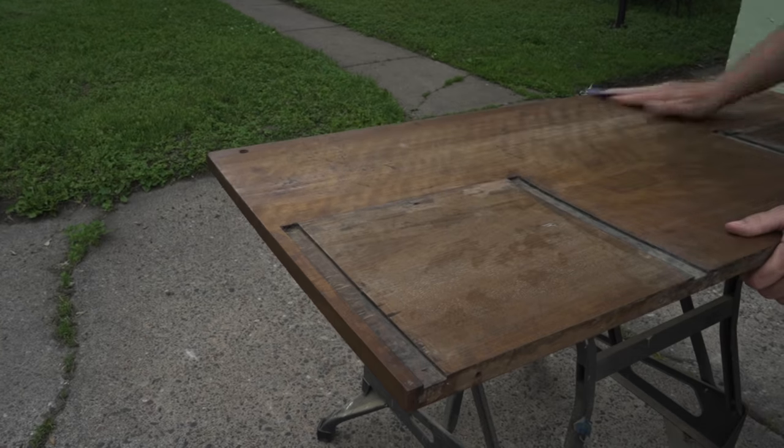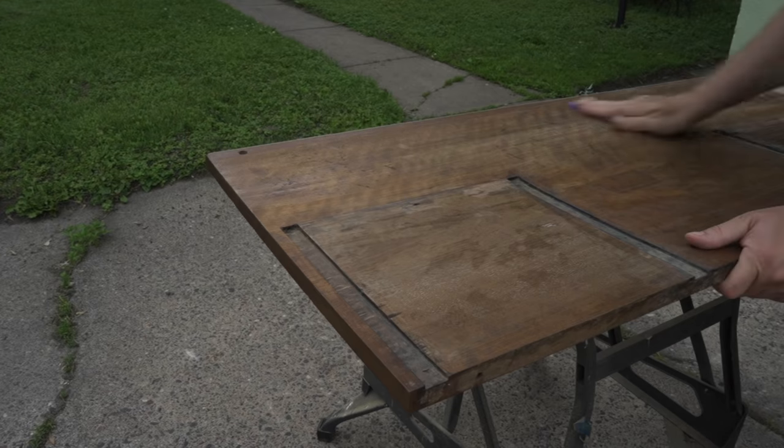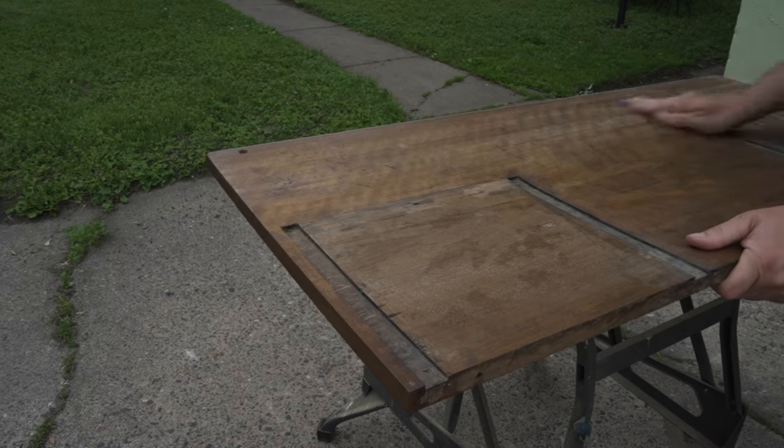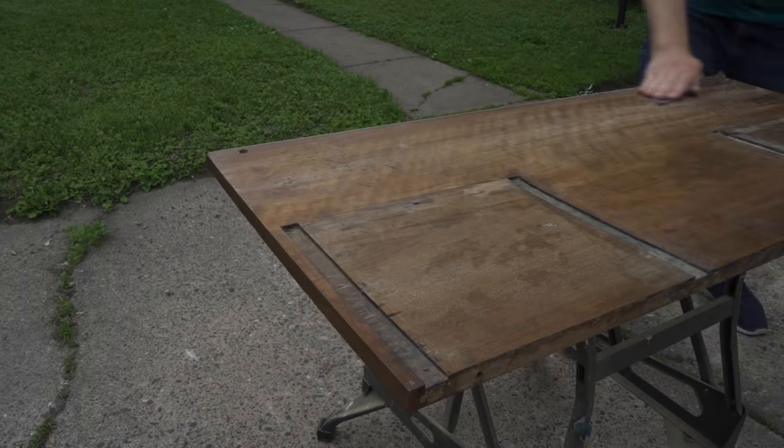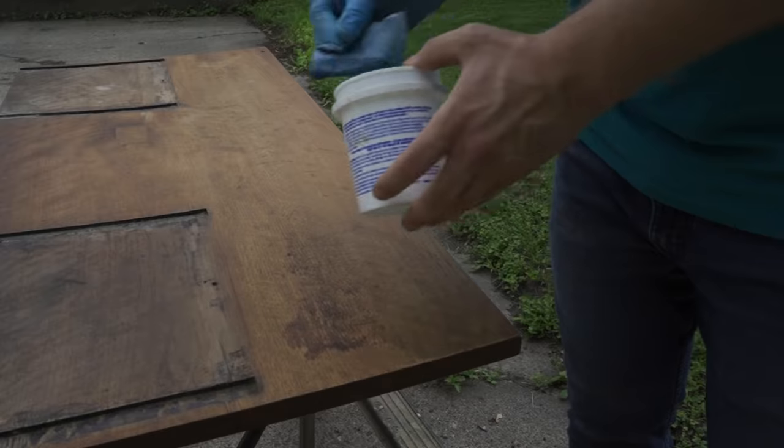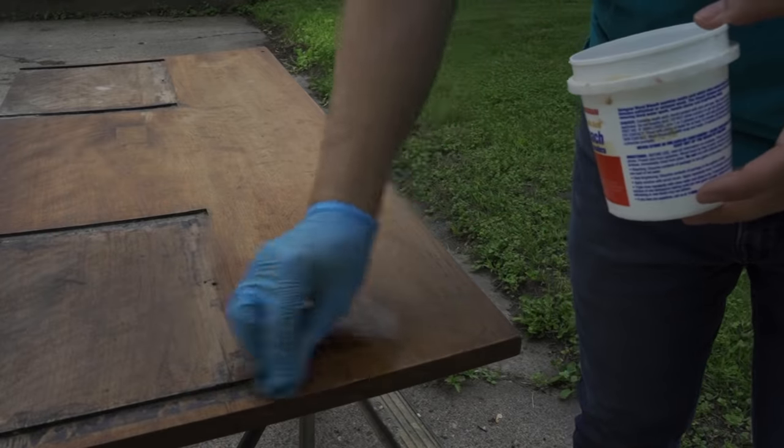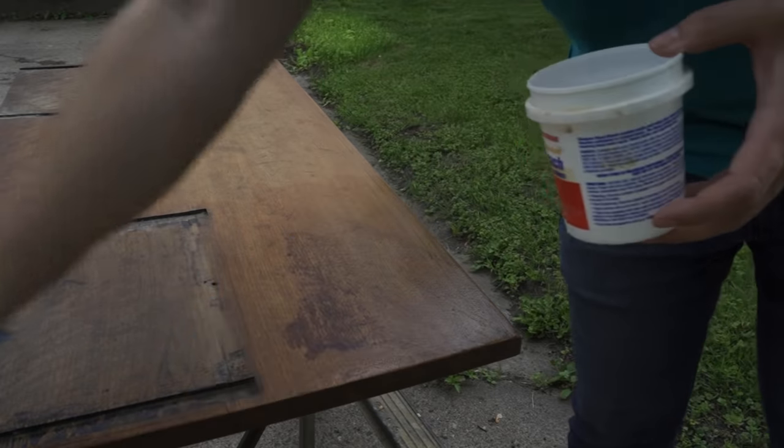Before I applied the oxalic acid, I just gave it a light sanding with some 180 grit sandpaper. I'm not sure if this helps the oxalic acid to be absorbed or not, but seemed like a good idea and it can't hurt. Then I applied the oxalic acid to the whole top and let it sit until it dried.